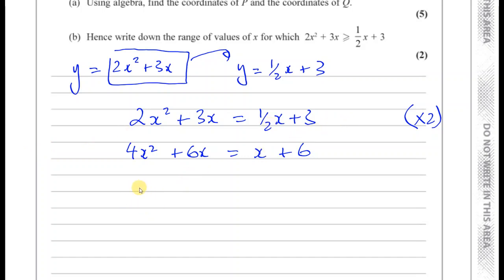Then I can see that I'm going to have some sort of quadratic equation, so I'll have 4x squared. I have 6x minus x, which is plus 5x. And I have plus 6 here, which I have to do 0 minus 6, which is minus 6, equals 0. So I have a quadratic equation which I can try to solve. Now let's see what the question says.